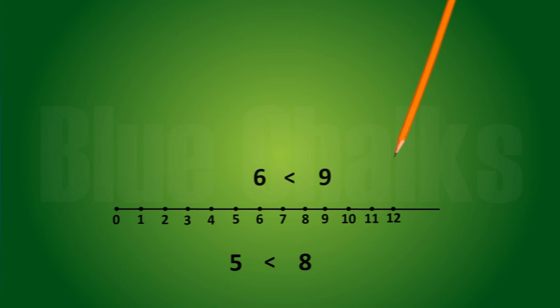By these observations, we can say that out of any two whole numbers, the number on the right of the other number is the greater number. We can also say that whole number on the left is the smaller number. Thank you very much.